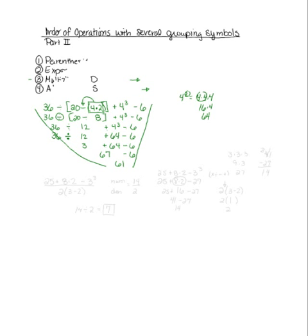The next example involves a fraction. If I gave you twenty-five plus eight times two minus three to the third power, divided by two times three minus two — we have a numerator and a denominator to deal with. In that respect, there are two grouping symbols: you do the numerator's expression first, then the denominator's expression, get those two answers, and then do the division at the end, because a fraction means to divide.